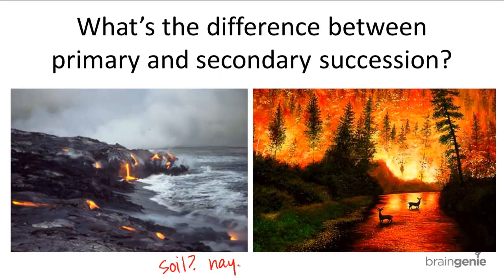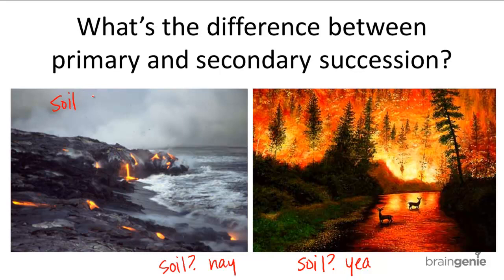Whereas, in secondary ecological succession, the ecosystem rebuilds when the soil is still intact. So the main difference between these two types of ecological succession is the presence of soil at the beginning of the process of succession. In fact, the main feature of primary ecological succession is soil formation.